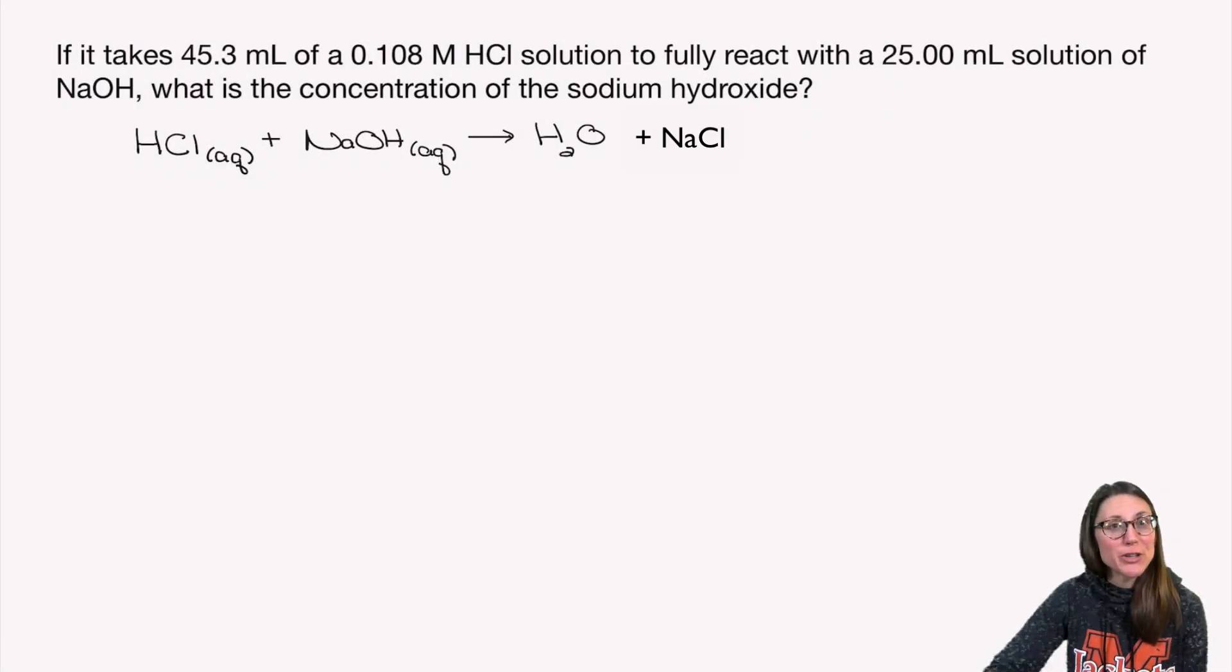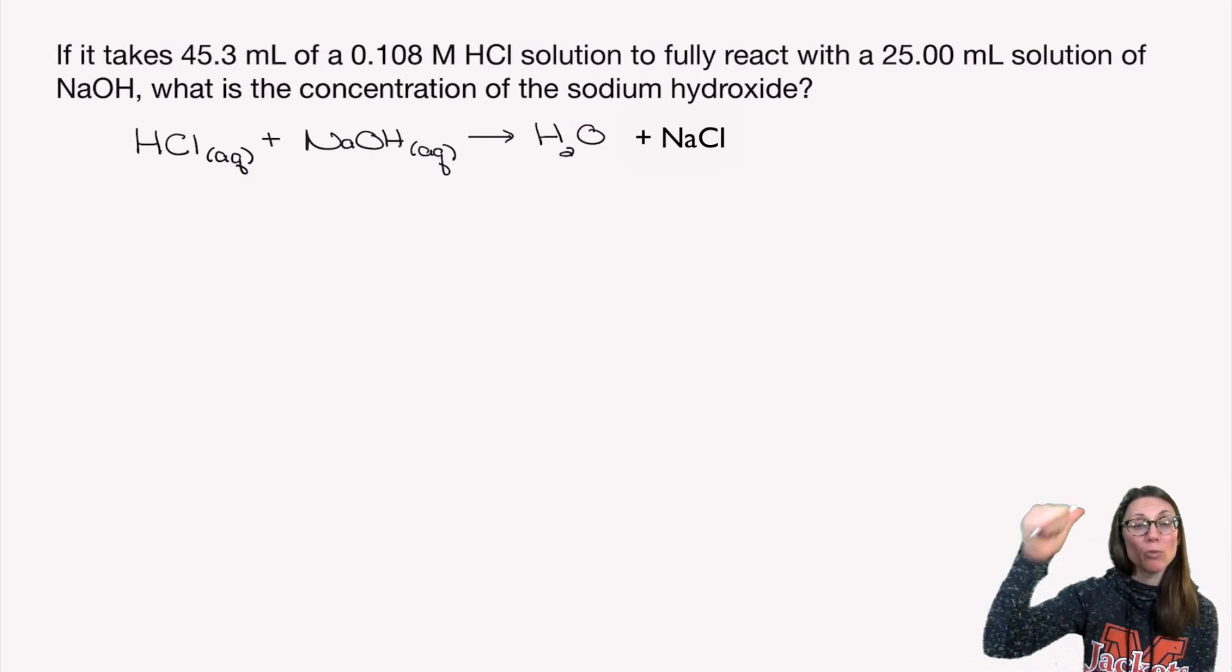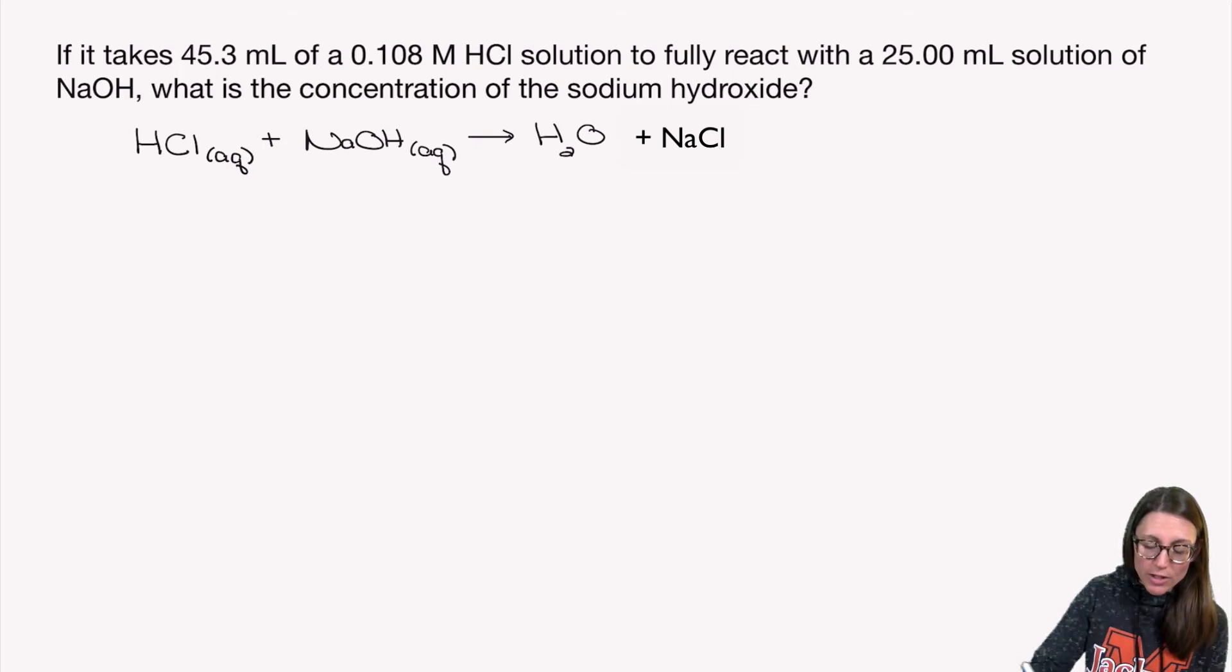Second and final question, just a little bit different. Now I've got 45.3 milliliters of a 0.108 molar HCl solution, and I am trying to react this with a 25 milliliter solution of sodium hydroxide. The question now is if those are the volumes necessary to get a complete reaction, what's the concentration of the sodium hydroxide that was being used? So again, we're going to go molarity equation, mole ratio, molarity equation. We will start with the chemical that we know both a concentration and a volume for. In this case, that is the HCl.